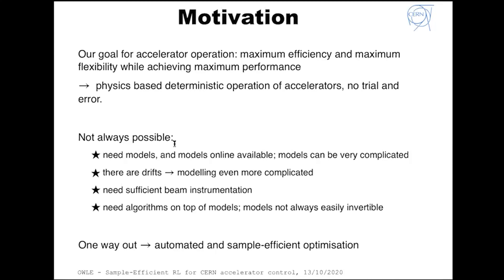This is not always possible because one needs models available online, and these models can be very complicated. There might also be drifts — Kevin mentioned effects like hysteresis, temperature effects, aging, etc. — which makes modeling even more complicated. Of course one needs sufficient beam instrumentation, which is also not always available. On top of models and beam instrumentation one needs algorithms, and the models might not always be easily invertible. So one way out is to move toward automated and sample-efficient optimization using mathematical optimization algorithms.